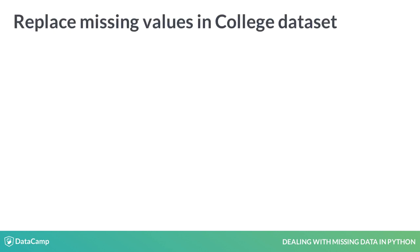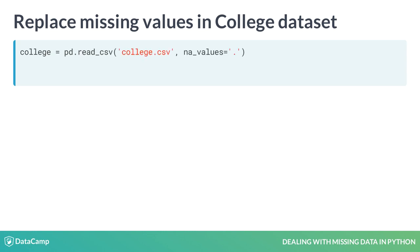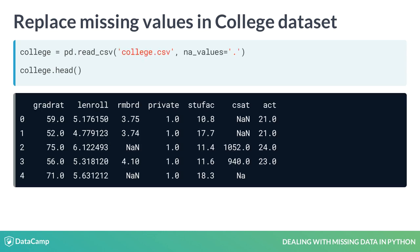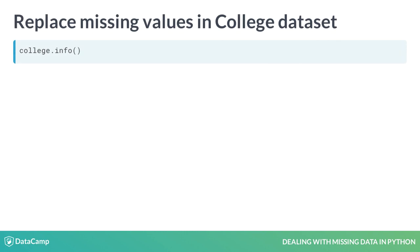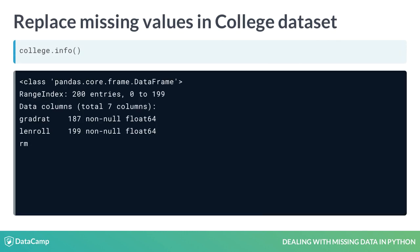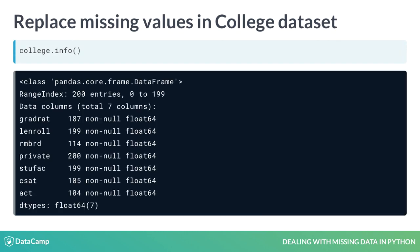This can be simply achieved while loading the data set to a DataFrame. You can use the argument na_values in pd.read_csv to specify the values for missing data. If you again check the info() of college, you'll find that all the columns are now float64 type. This is great.